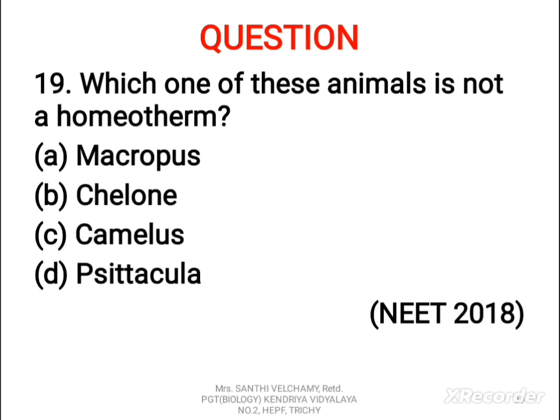19th question: which one of these animals is not a homeotherm? A) Macropus, B) Chelone, C) Camelus, D) Psittacula. The correct answer is B, Chelone. Homeotherms are animals that maintain constant body temperature irrespective of surrounding temperature by metabolic activity — for example, birds and mammals. Chelone is a turtle belonging to class Reptilia, and they are poikilotherms or cold-blooded animals.